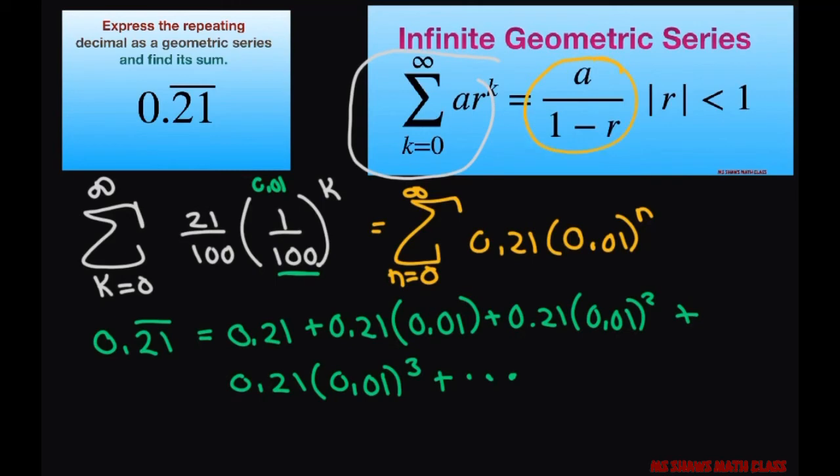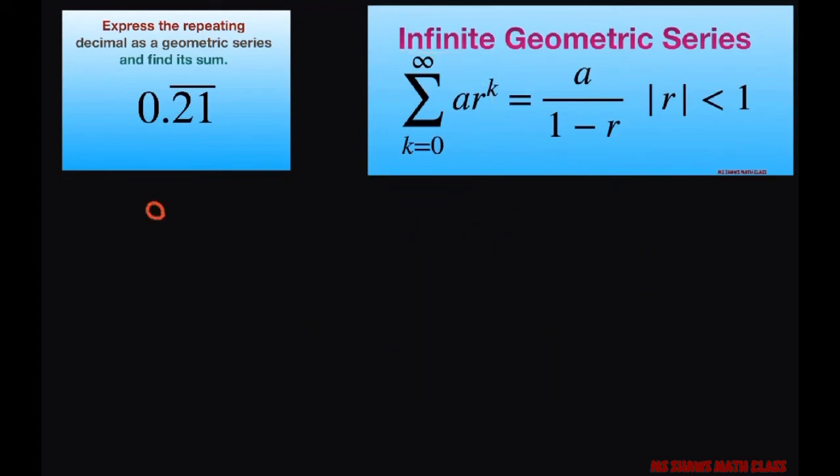So we have our a, this is your a, and this is your r, and we're going to use this formula. So let's do that. We're going to get a divided by 1 minus r.